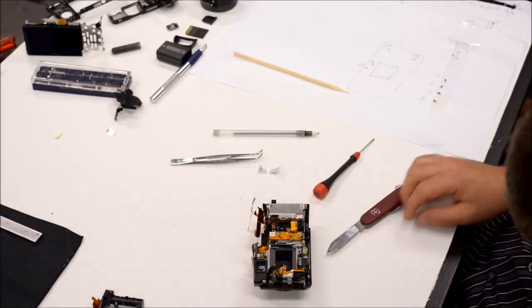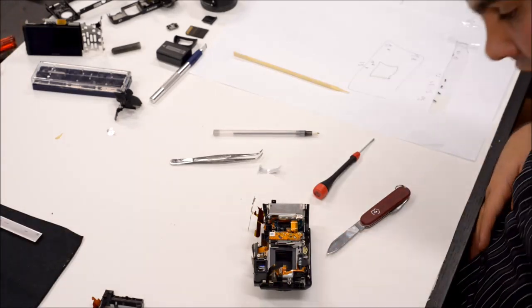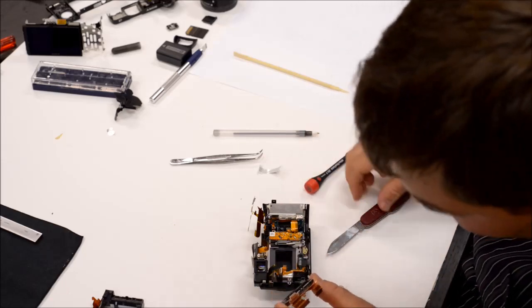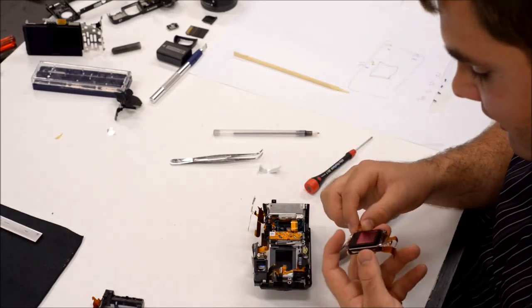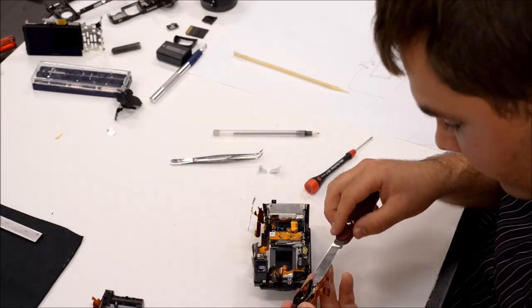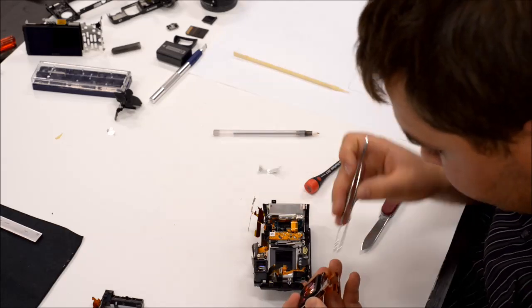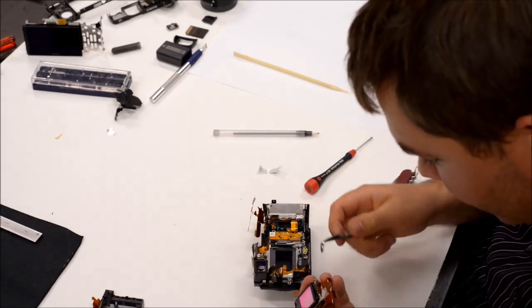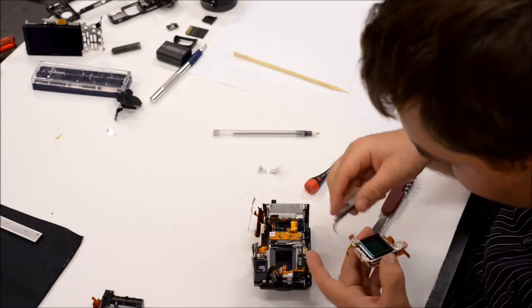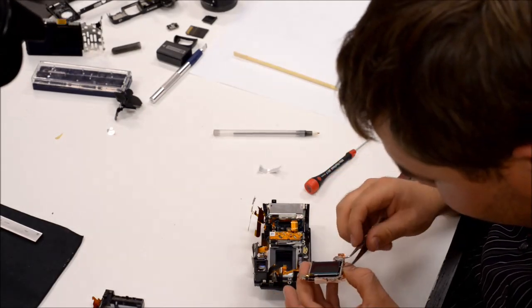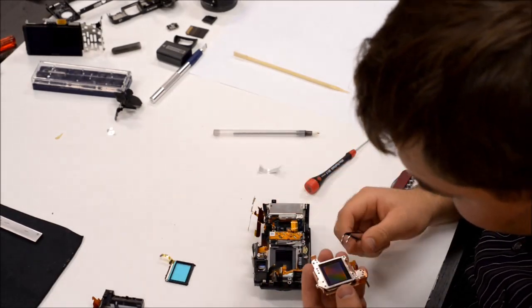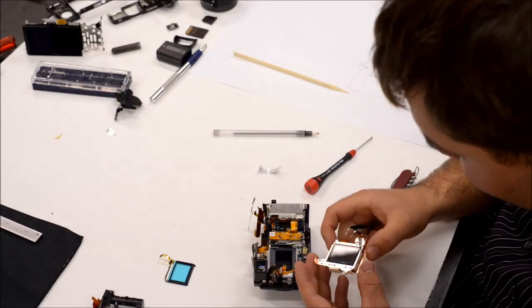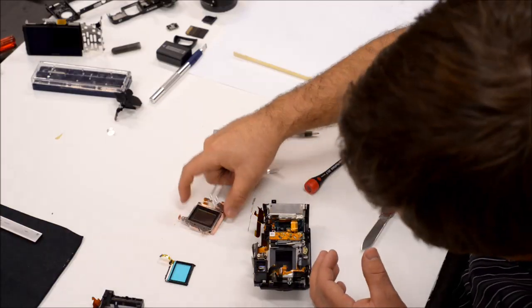So here we see the sensor out. It is a very nice unit and the filter we are wanting to take out is just held in place by a sort of a black metal frame. It's sort of springy and has, just release it and then it should come off. In this conversion, we just remove the whole unit and do not replace it with a filter to get full spectrum sensitivity.